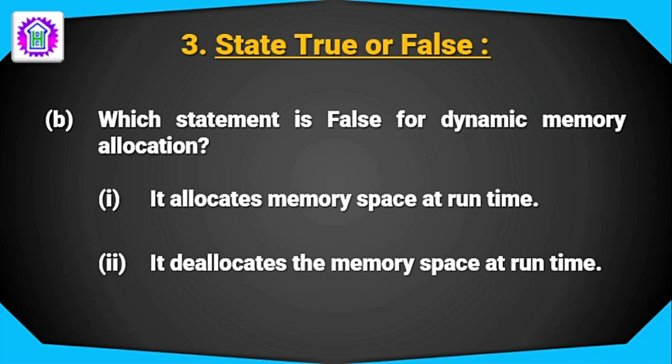Question number B, which statement is false for dynamic memory allocation. Dynamic memory allocation is allocating memory at runtime. So the first option is correct. So the false statement will be it deallocates the memory space at runtime. So option 2 will be the false.